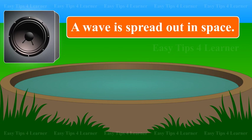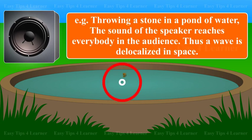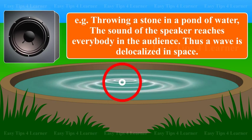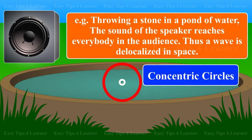Wave. A wave is spread out in space. Example: on throwing a stone in a pond of water, the waves start moving out in the form of concentric circles.